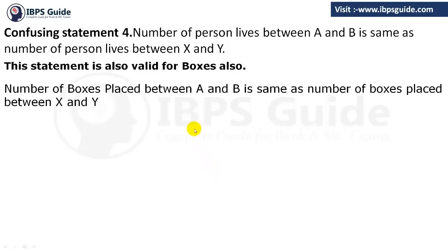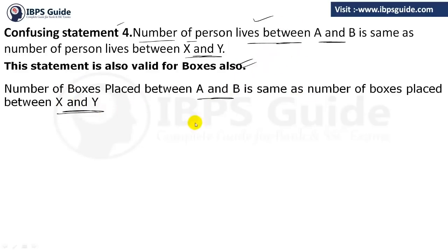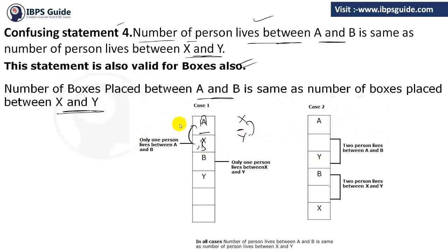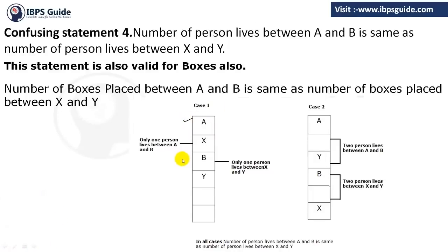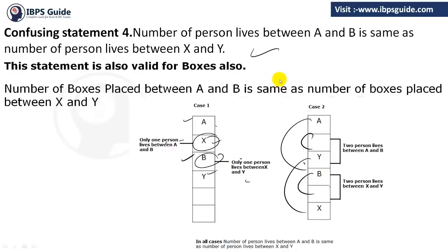The fourth confusing statement: the number of persons living between A and B is the same as the number of persons living between X and Y. This is for floor-based puzzles and is also applicable to box-based. Whatever the number of boxes or persons between A and B — suppose if there is only one — then between X and Y there should also be only one. If between A and B there are two persons, then between X and Y there are also two persons.